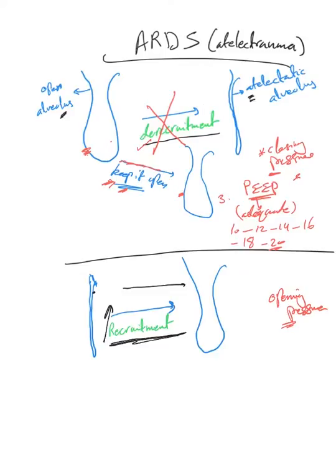There are two ways to recruit alveoli in ARDS. The first is to provide a very high level of PEEP for a very short period — a few seconds — trying to exceed the opening pressure and recruit alveoli. This must be very brief because sustaining a very high PEEP can cause complications, as high PEEP can be detrimental.